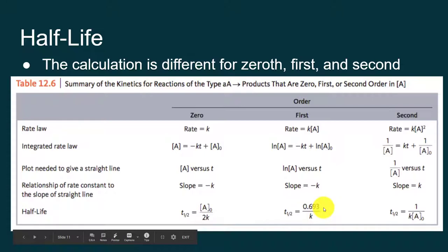The first order is 0.693 divided by the rate constant. And I'll show you where that comes from later. For a second order, the half-life is 1 over the rate constant times the initial concentration. Something to point out is that for a first order reaction, the half-life is a constant value. It's just dependent on the rate constant. Whereas for a zeroth and second order reaction, the half-life actually changes depending on what your initial concentration is.